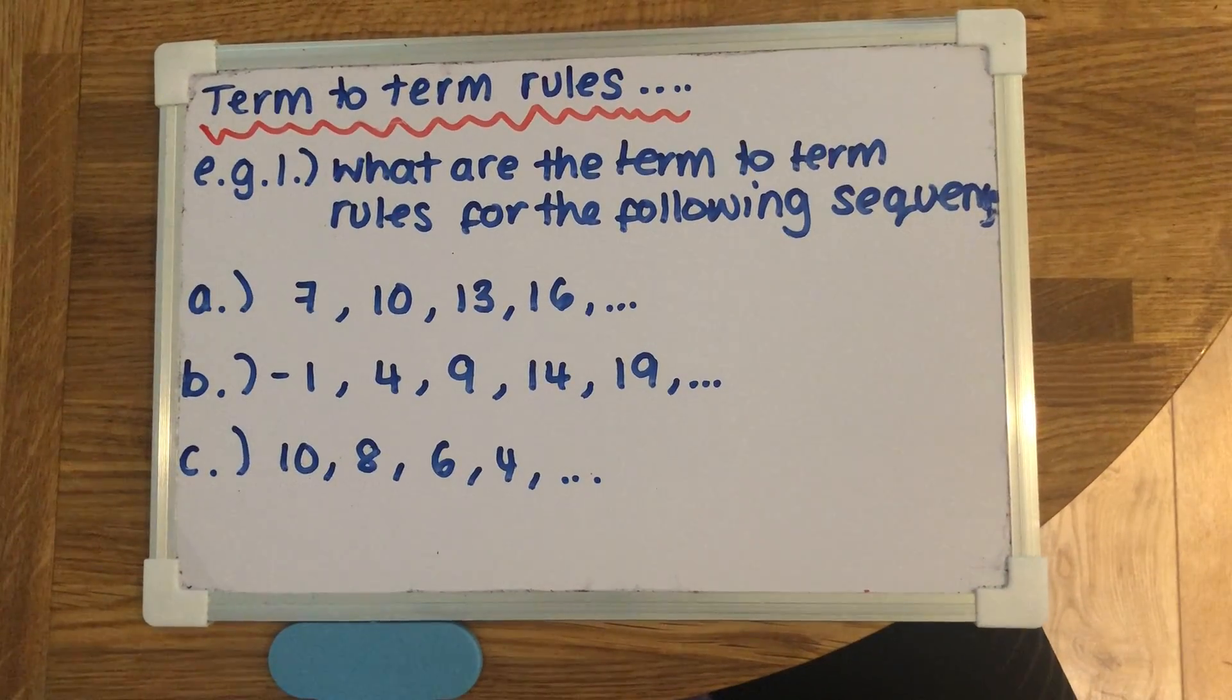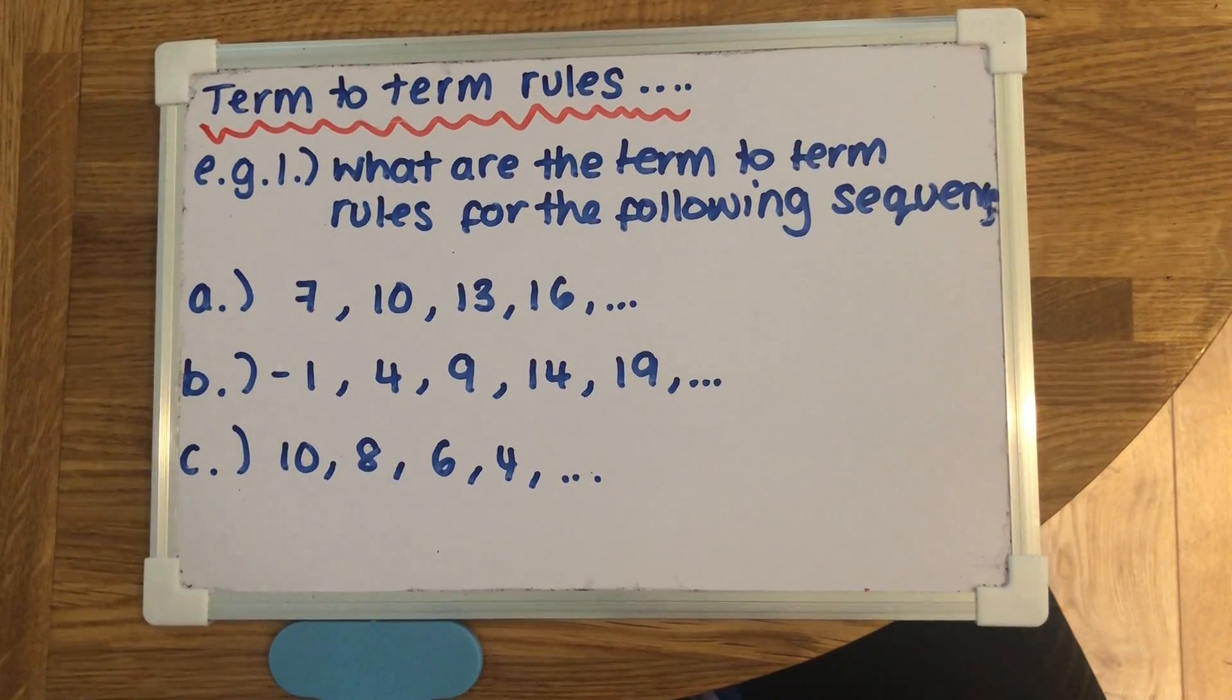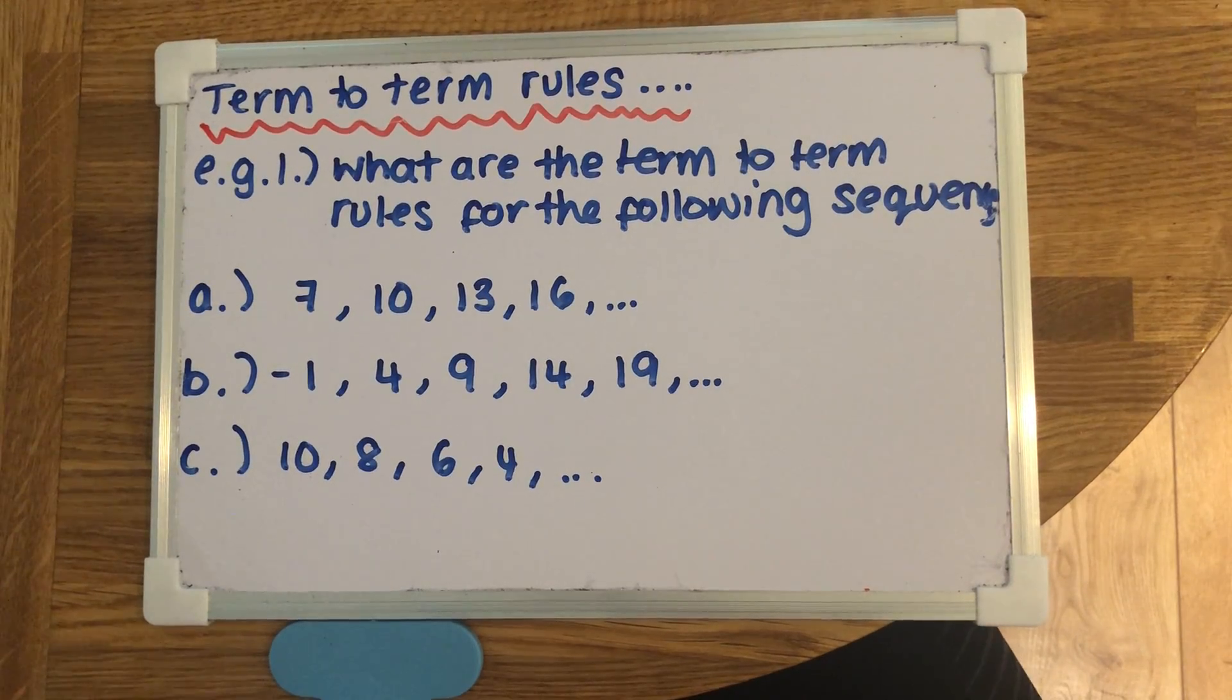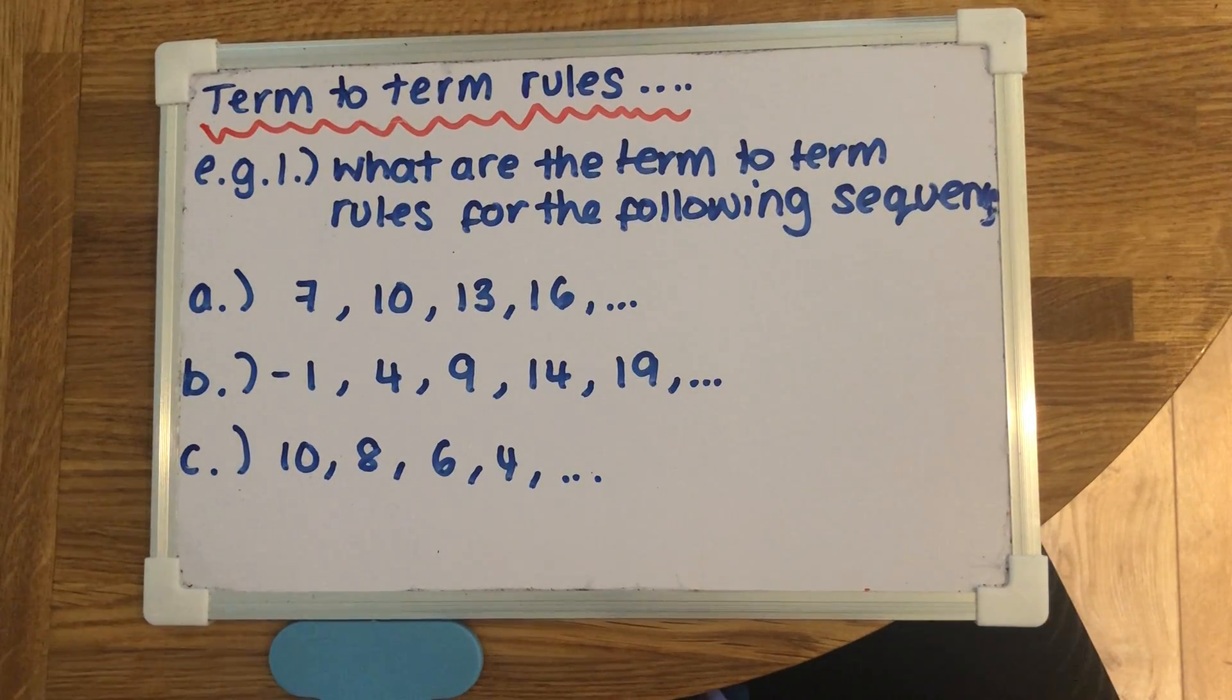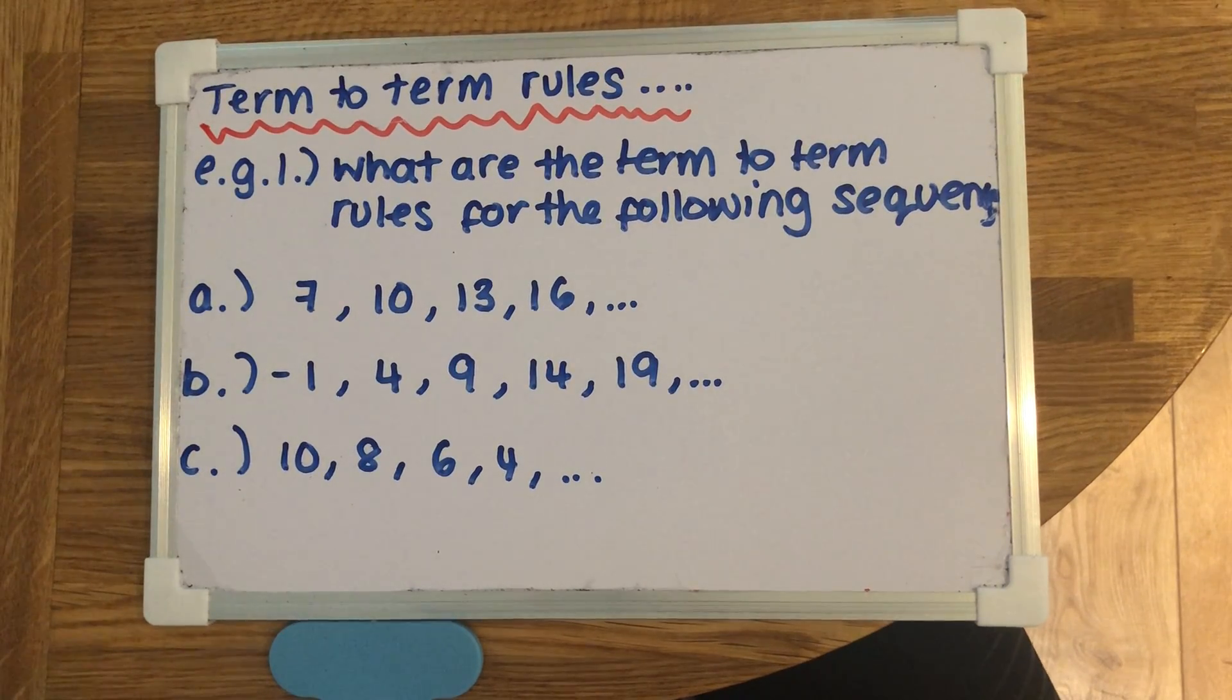Okay, so the next thing we're doing is a thing called the term to term rule. This is just being able to recognize the pattern of a sequence and work out how much a sequence is going up by. The sorts of questions you might have would be ones like this.